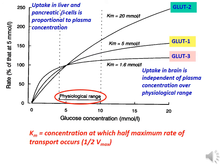The graph shows the rate of glucose uptake by different tissues via their specific glucose transporters. Uptake of glucose in the liver and in pancreatic beta cells is proportional to plasma concentration. Uptake in the brain is independent of plasma concentration over the physiological range.